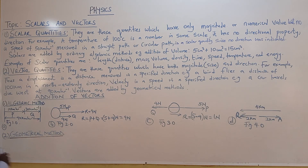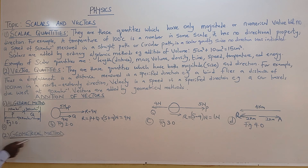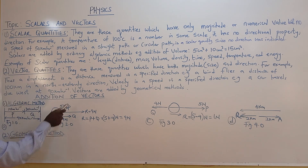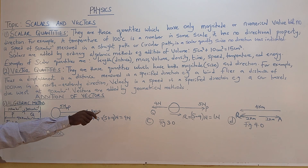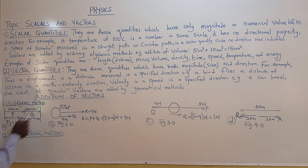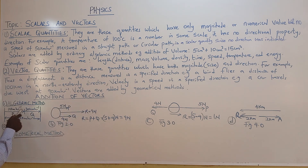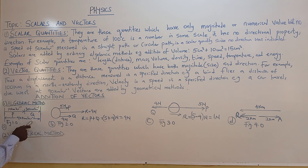Here is the addition of vectors. We have the algebraic method and the geometrical method of solving problems. In the algebraic method, you see the arrow pointing in the eastern direction — due east. Adding P and Q together: 10 kilometers per hour plus 30 kilometers per hour gives you 40 kilometers per hour.